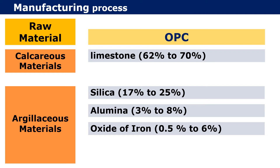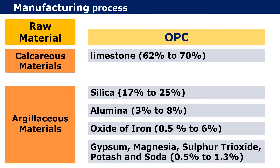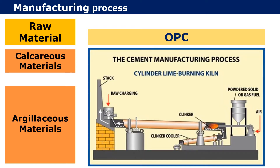There are other ingredients also like gypsum, magnesia, sulphur trioxide, potash and soda which range between 0.5 to 1.3 percent. All these materials are mixed in a fixed proportion and heated in kilns to form clinkers, which are then ground to the required fineness to obtain Ordinary Portland Cement.